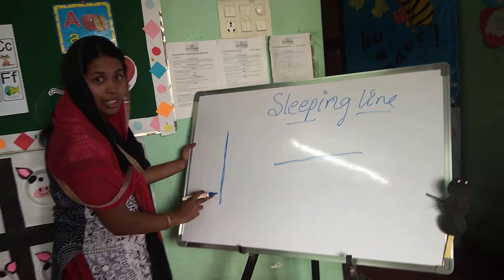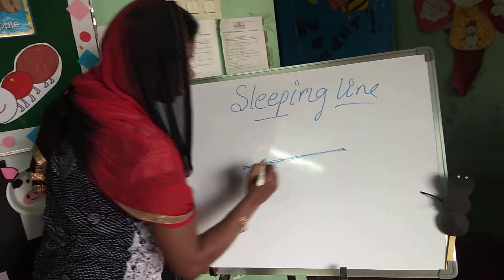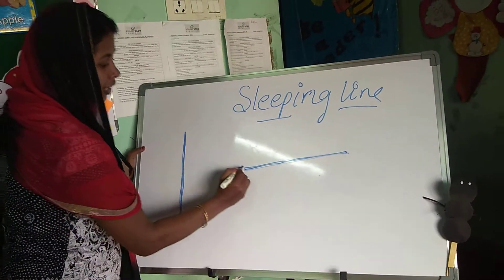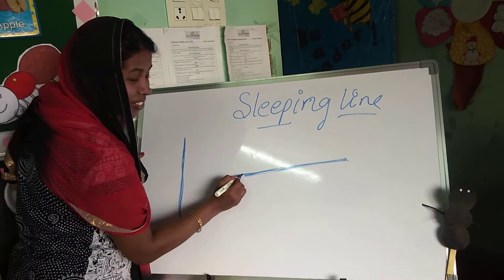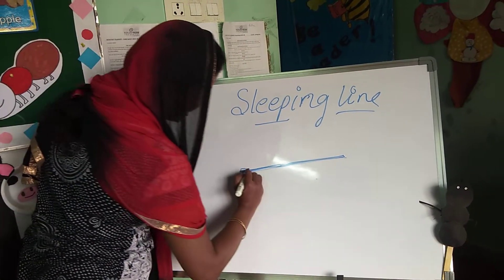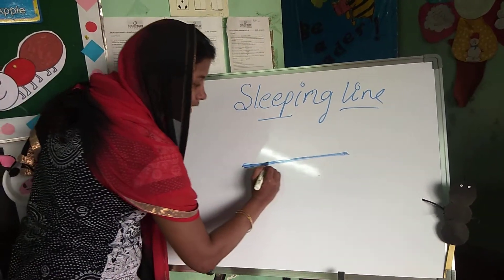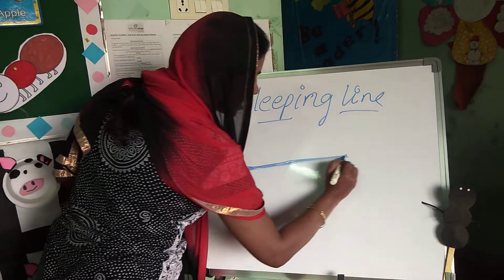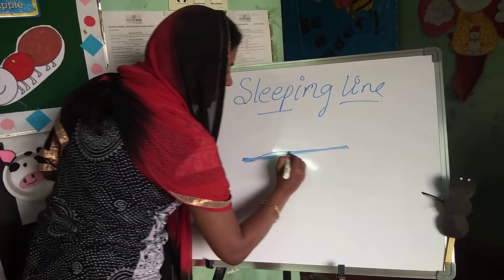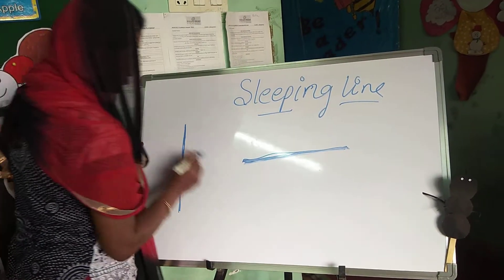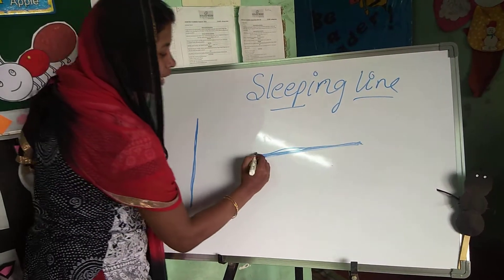The first stroke is standing line. The second stroke is sleeping line. See, sleeping line is sleeping. What is this? Yes, sleeping line. Wow, this is standing line. This is sleeping line.